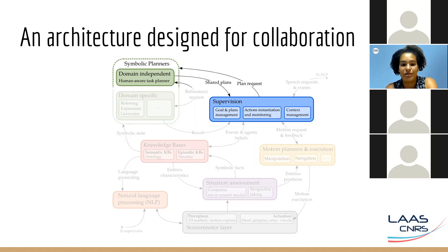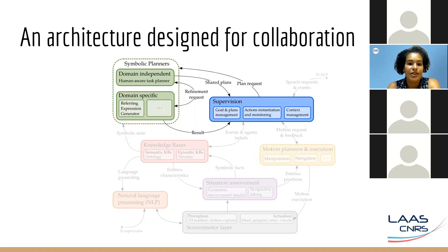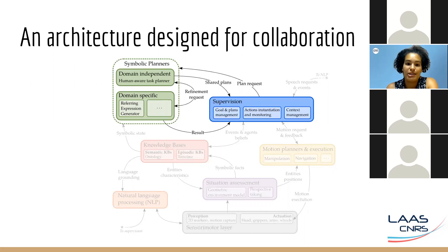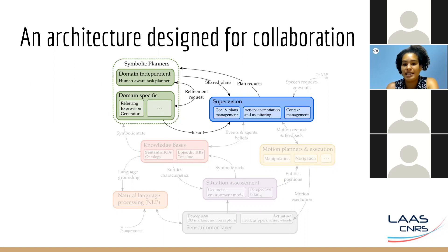The human-aware task planner generates what we call shared plans — plans with some actions allocated to the human and others to the robot. To generate a plan, it bases itself on the current state of the world stored in the knowledge bases. The referring expression generator is a specific planner that gives the supervision the needed nouns and adjectives to talk about an object and distinguish it from others. For example, to talk about a given pen, should the robot say 'the pen' or 'the blue pen on the table'?